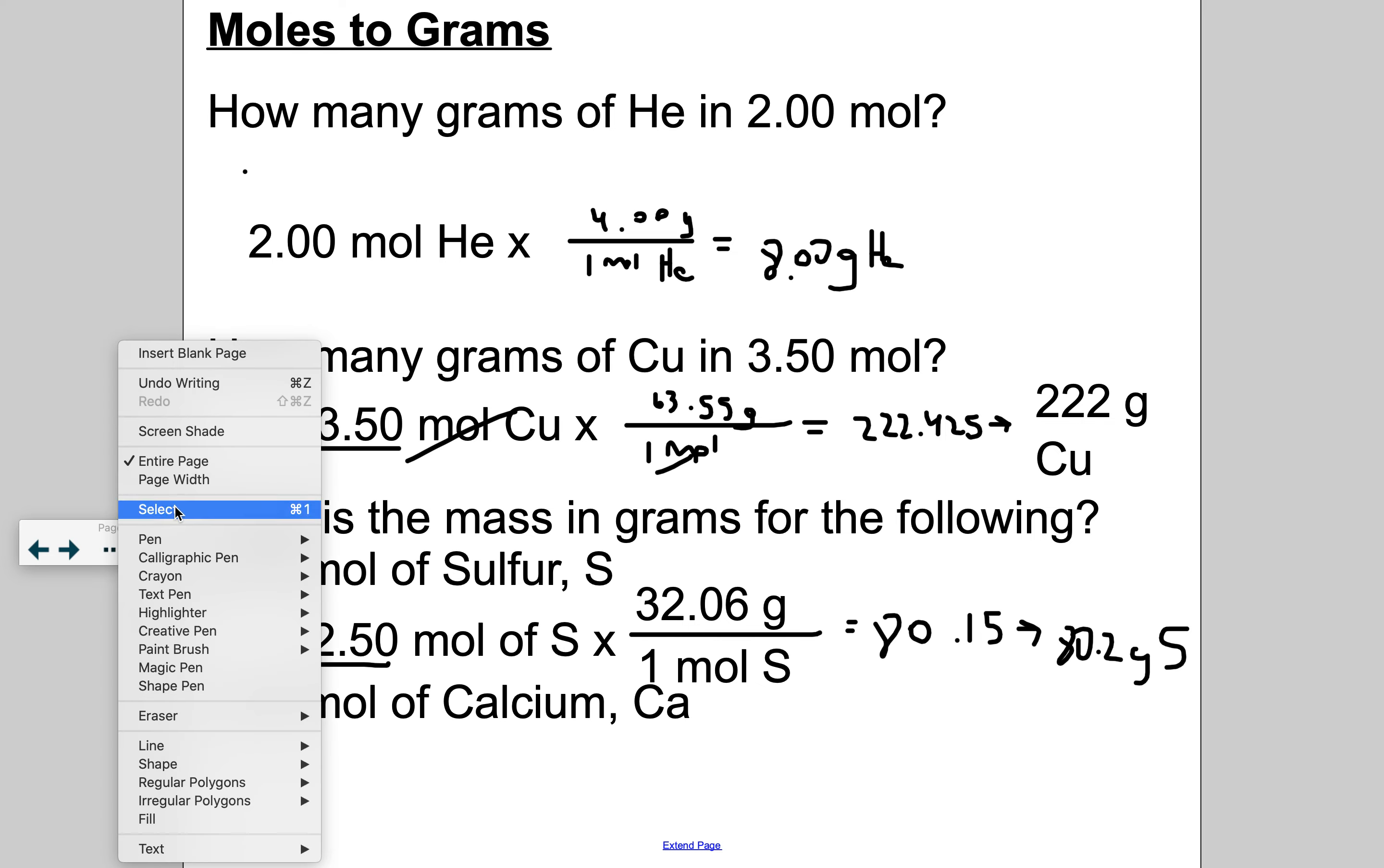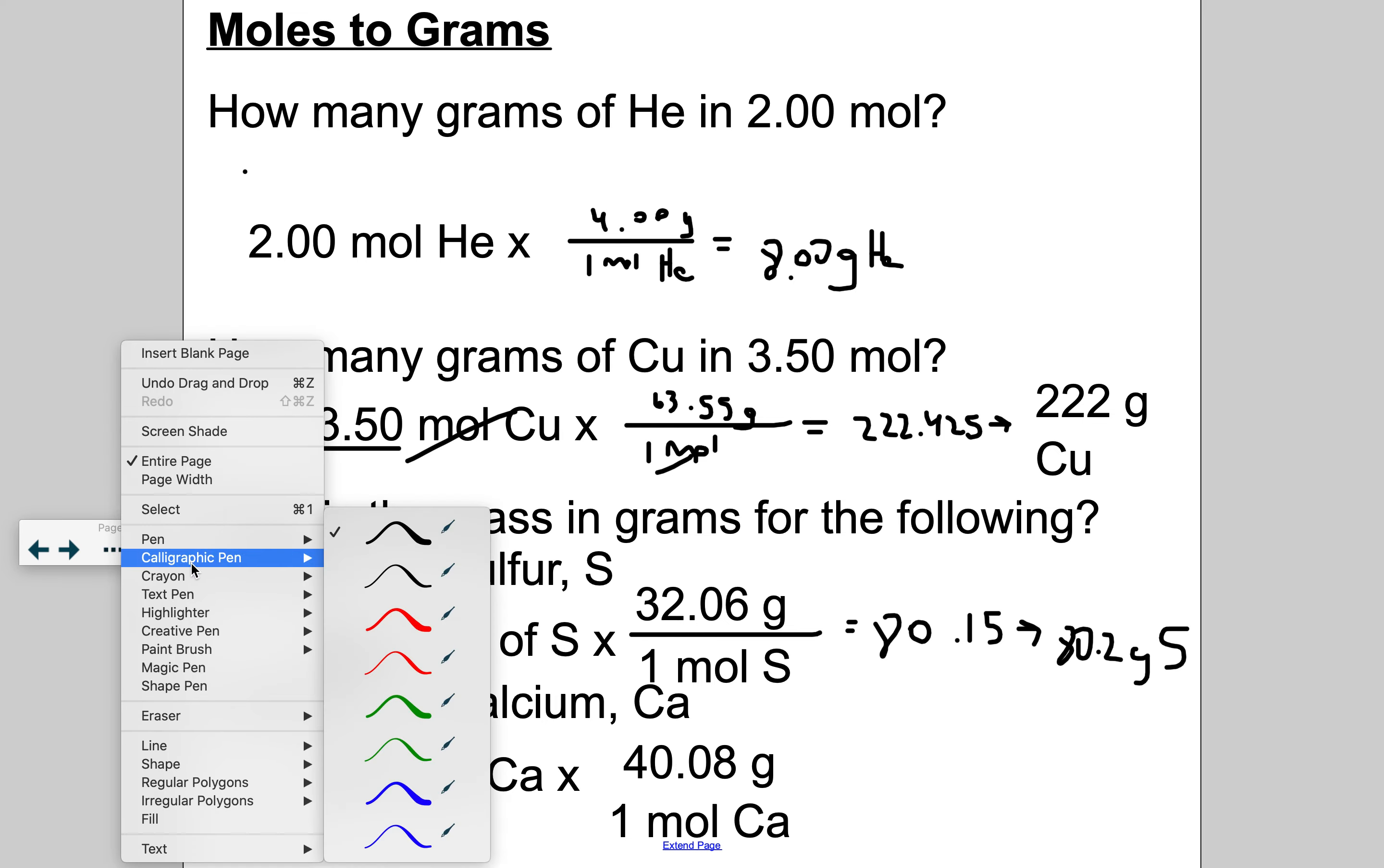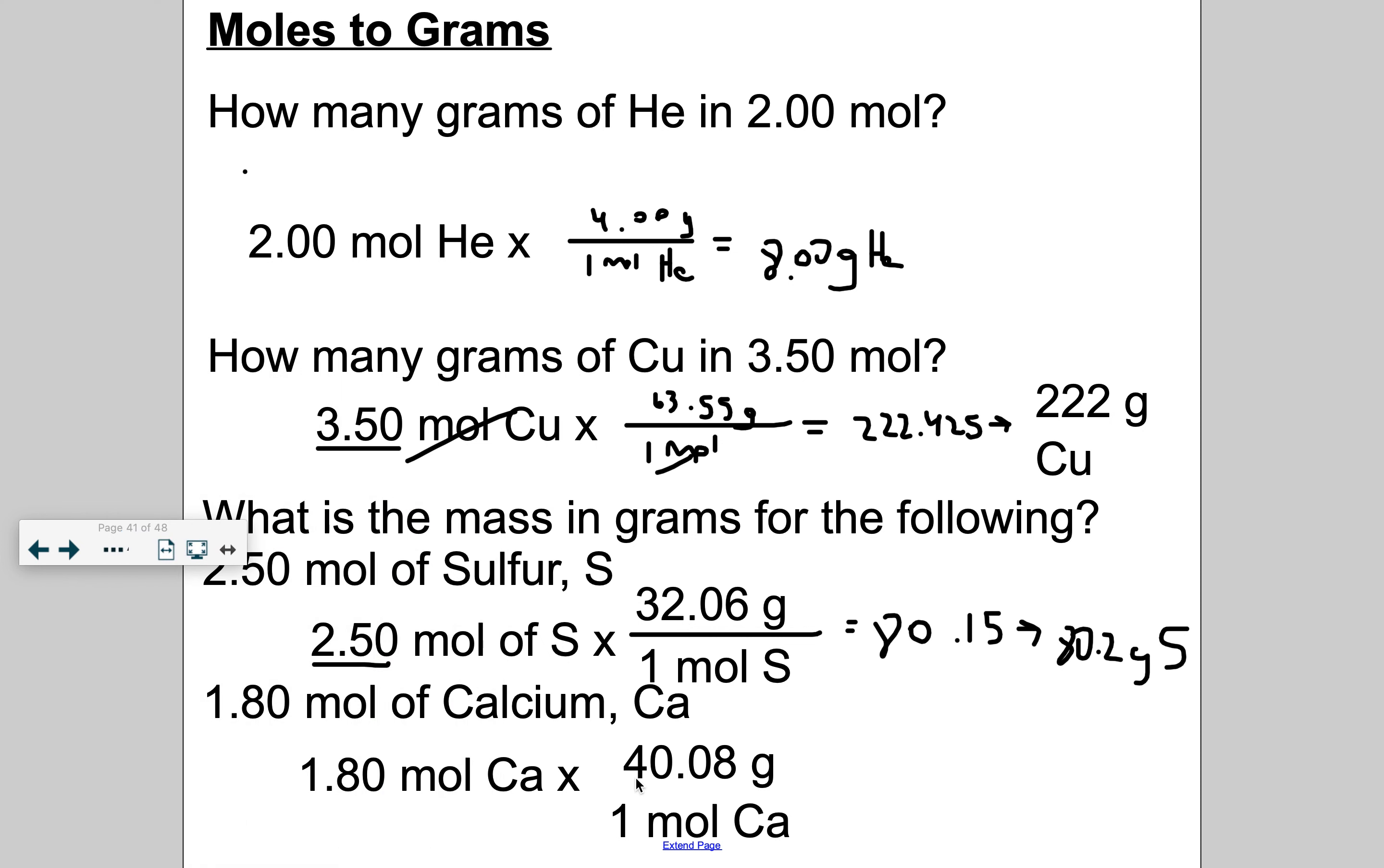1.8 moles of calcium. And then I'm going to figure out how many grams of it. So one mole of calcium will go on the bottom. And then I think it's 40.08 grams in one mole according to periodic table. So I'm going to do the math. 1.8 times 40.08, and I get 72.144. And then we got three sig figs. So really, it's 72.1 grams.